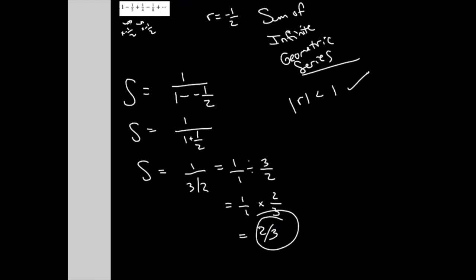I mean, why does that happen? Why can I take the sum of an infinite series? You know, if you look at something like this.